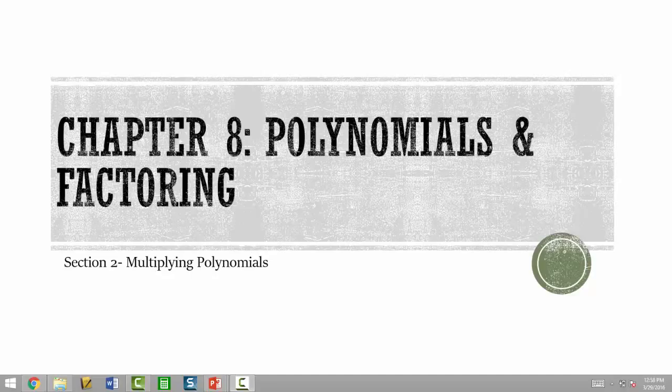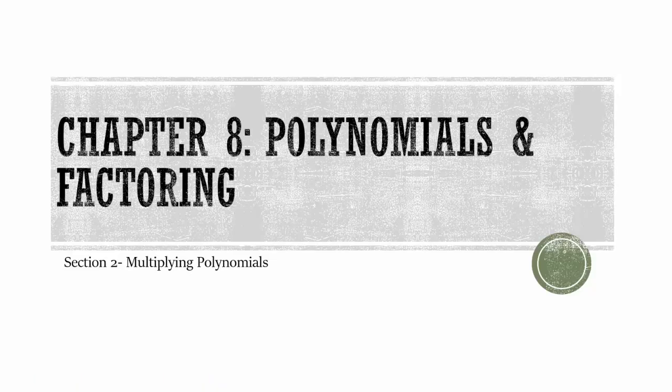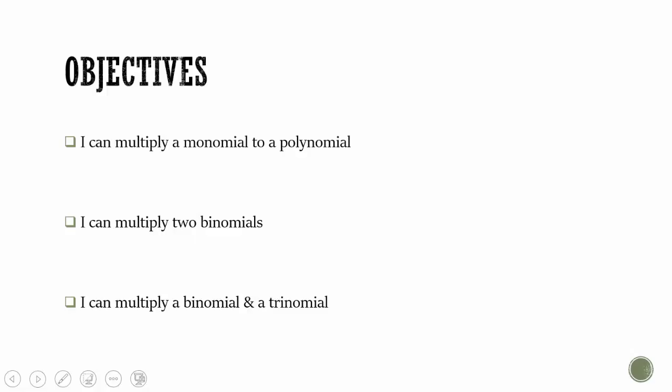Now that we've learned how to add and subtract polynomials, the next thing we're going to do is multiply them. We will not get to division until much later in the year because we have to do a lot of things in between before we can start dividing polynomials. By the end of this lesson, you should be able to multiply a monomial by a polynomial, multiply two binomials, and multiply a binomial and a trinomial together.